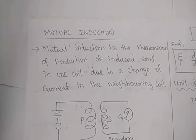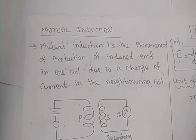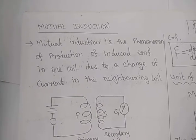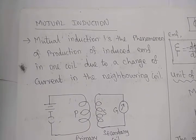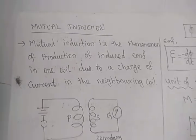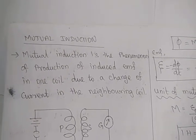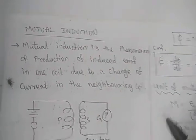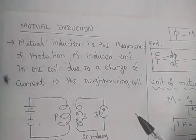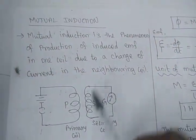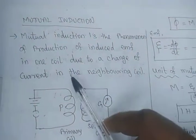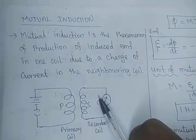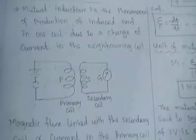Mutual induction is a phenomenon of production of induced EMF in one coil due to the change in current in the neighboring coil. Self inductance means in the same coil there is a change in magnetic flux and EMF is induced in that same coil. In mutual inductance, the change in flux in one coil induces EMF in the neighboring coil due to the change in current in that neighboring coil.